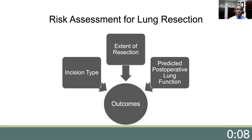The risk assessment for lung resection really hinges on three important factors. The incision type, which includes whether the patient undergoes an open thoracotomy or a minimally invasive approach. The extent of resection hinges on whether the patient undergoes a lobar resection or a sublobar resection, which is parenchymal sparing. The most important factor is the predicted postoperative lung function,